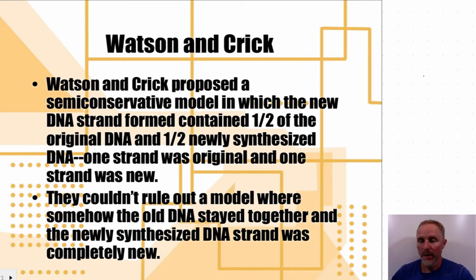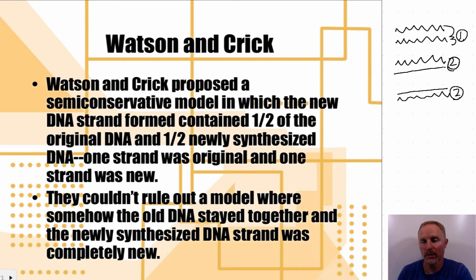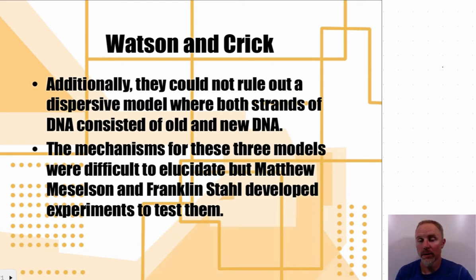What you end up with, starting from one original double helix, is two new molecules after one round of replication — each containing one old strand and one new strand. However, you still have to rule out other modes of replication. You can't just say it looks obvious and assume that's how it happens. They couldn't rule out the conservative model or the dispersive model without experimentation. Meselson and Stahl were the ones who elucidated how DNA replicates through experimental evidence.